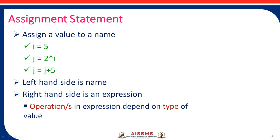The value 5 is assigned to the name i. The left-hand side is the name, and the right-hand side is an expression. This expression contains operations that depend on the type of value used in the expression.